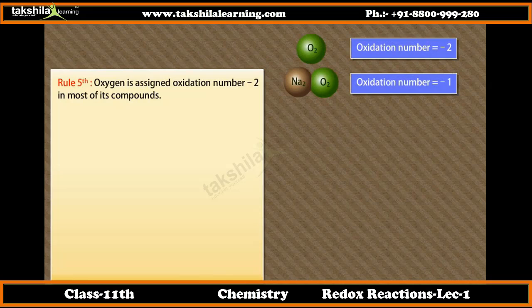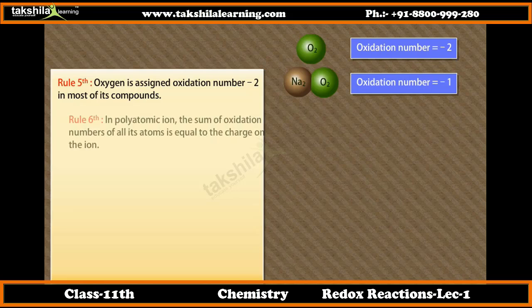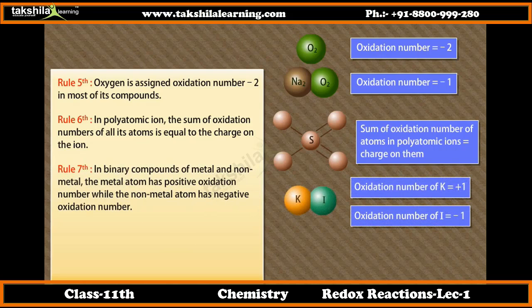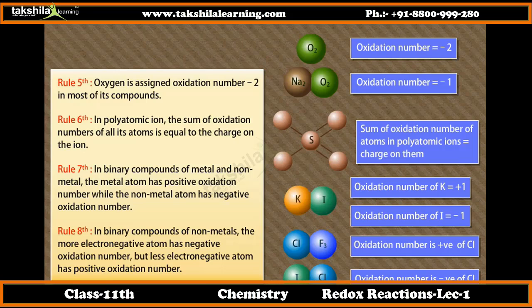Rule 5: Oxygen is assigned oxidation number -2 in most of its compounds. Rule 6: In a polyatomic ion, the sum of oxidation numbers of all its atoms is equal to the charge on the ion. Rule 7: In binary compounds of metal and non-metal, the metal atom has a positive oxidation number while the non-metal atom has a negative oxidation number. Rule 8: In binary compounds of non-metals, the more electronegative atom has a negative oxidation number, while the less electronegative atom has a positive oxidation number.